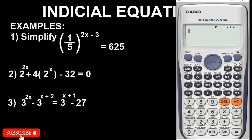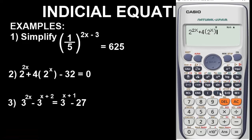For example 2, we have 2 to the power of (2x plus 4), and we have 1 minus 32. To bring out the equation, by now you should know not to press equals directly. You press Alpha and the equals key — assign x equal to 0.